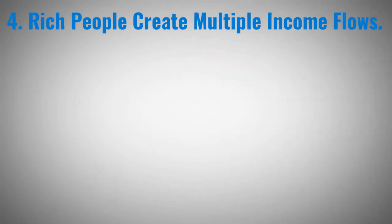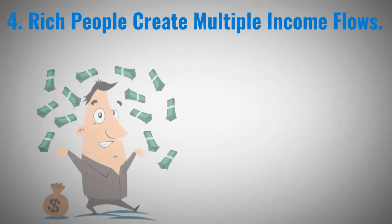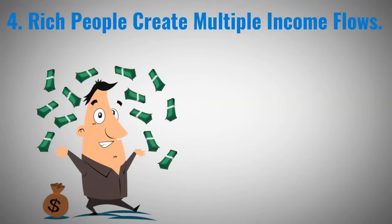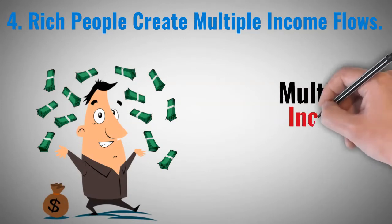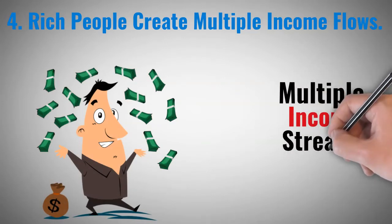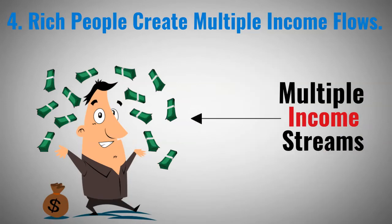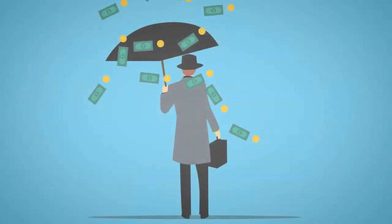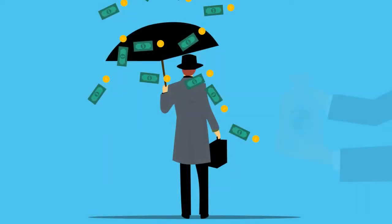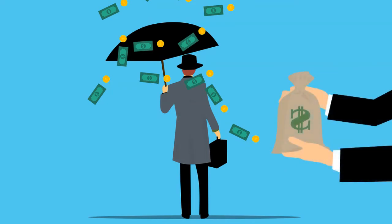Rich people create multiple income flows. The more money you have, the easier it is to make more money. And one of the fastest ways of making more money is to have multiple income streams. The rich don't depend on one source of income due to unforeseen circumstances. By having multiple streams of income, the rich remain wealthy and use the excess income to invest in new income flows. This is majorly the primary way the rich remain rich.